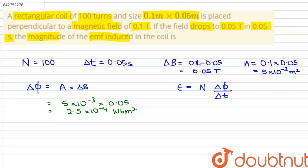Substituting the values of delta phi and delta t in this equation, we can rewrite it as epsilon is equals to 100 into 2.5 into 10 to the power minus 4 divided by 5 into 10 to the power minus 2.